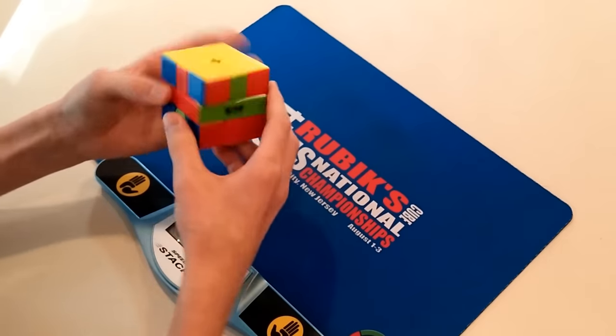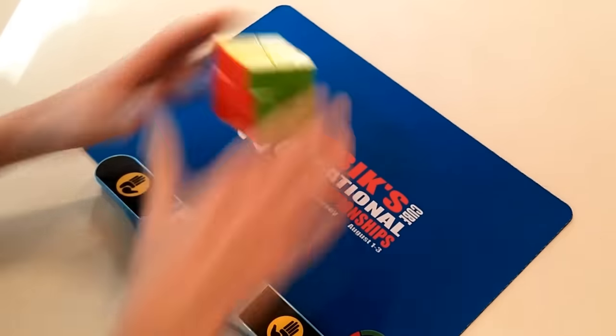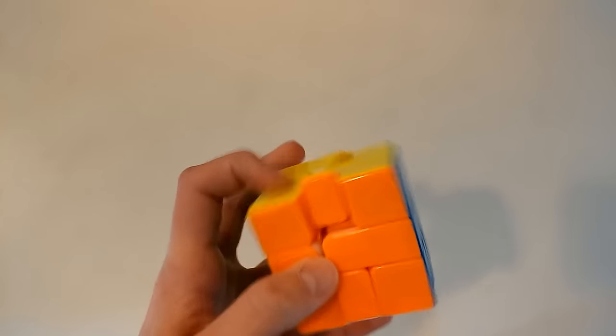One of the best parts of this square one is its incredible lack of pops. I've done hundreds of solves on it since I've gotten it and it's not popped once. The pieces do jut out a bit sometimes and I'm not really sure what this is, but they've never actually come out.